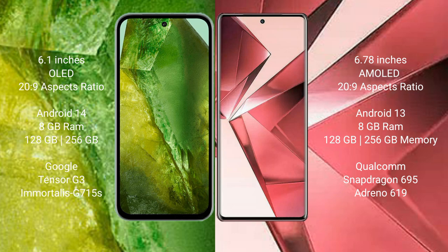Google Pixel 8a runs on the Android 14 operating system. It comes with 8GB RAM and 128GB or 256GB internal storage, powered by the Google Tensor G3 processor with Adreno 715 GPU.